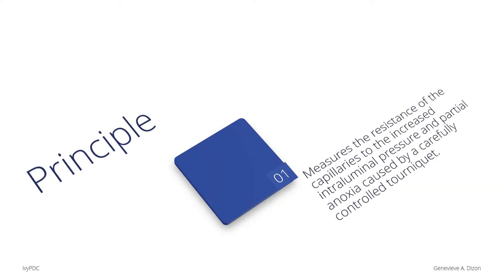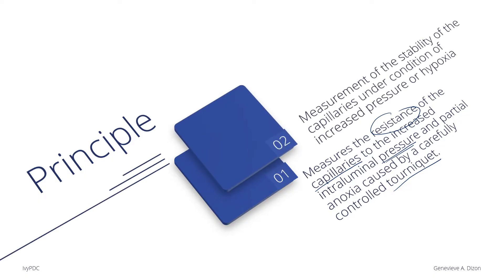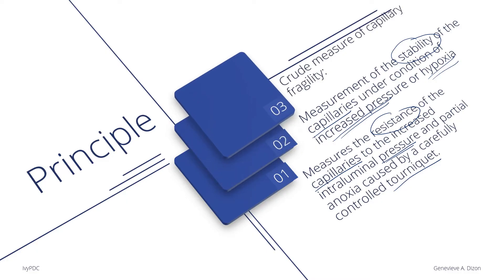CFT has the following principle: it measures if the capillaries are able to resist the pressure given by the tourniquet, or in our experiment, a blood pressure apparatus. This means the test measures if capillaries can remain stable under increased pressure or in conditions where there is a decrease in oxygen. Therefore, CFT is a crude measurement of capillary fragility.